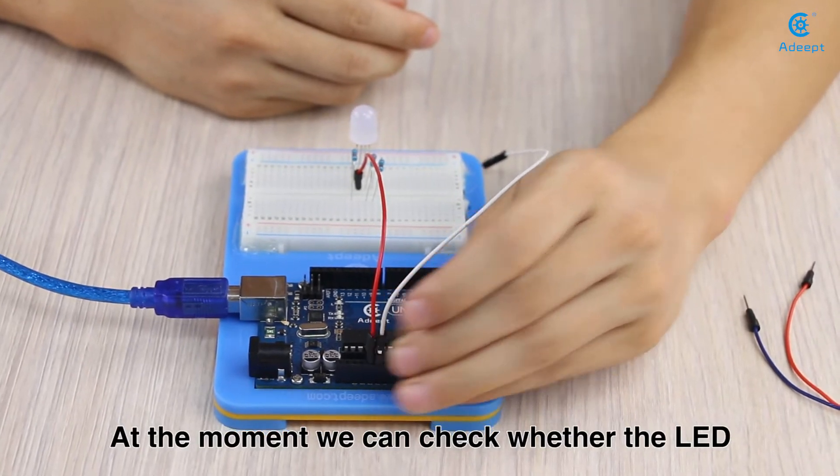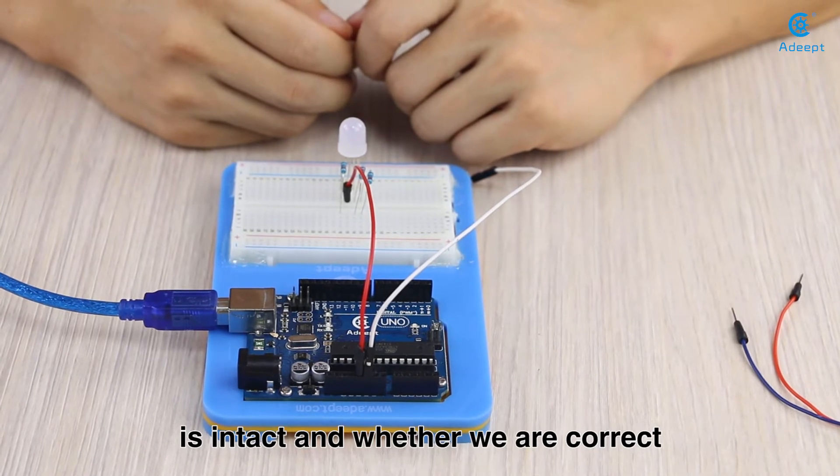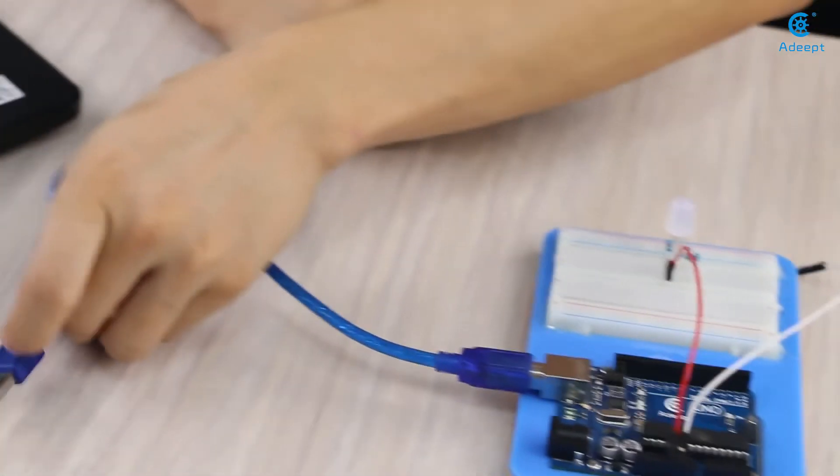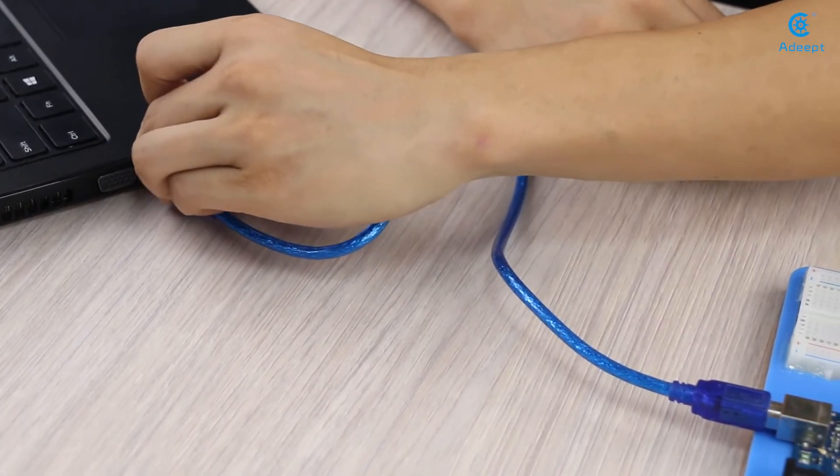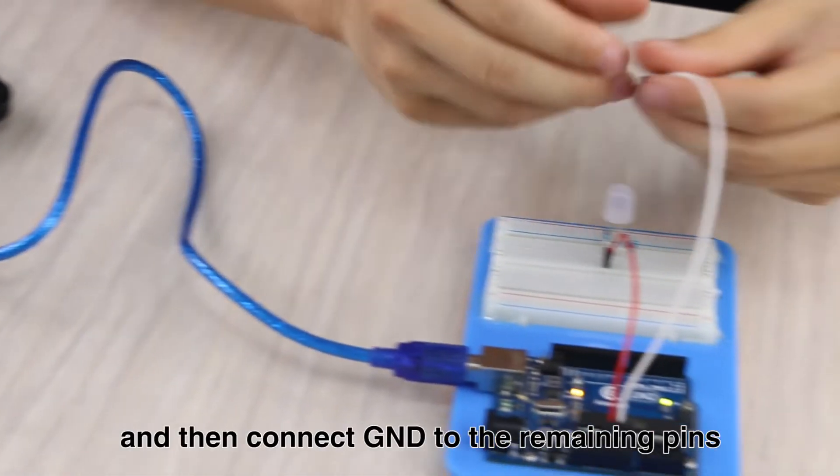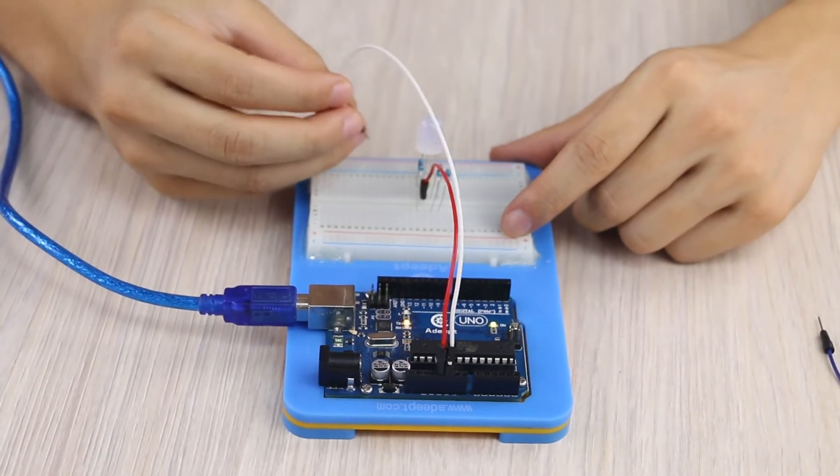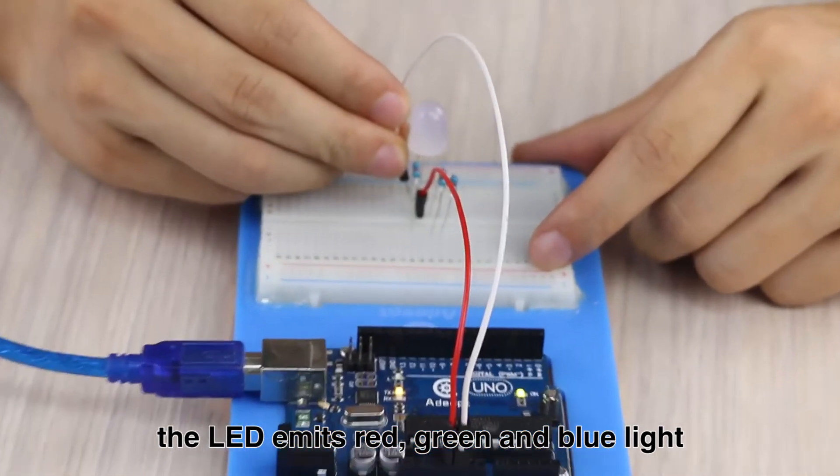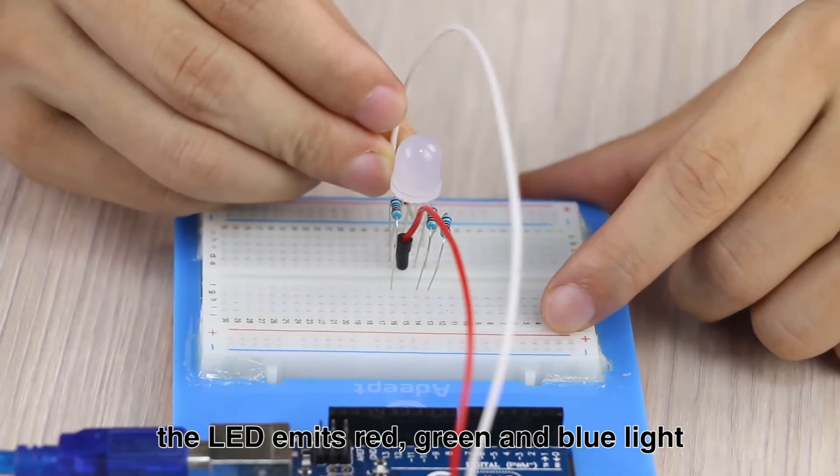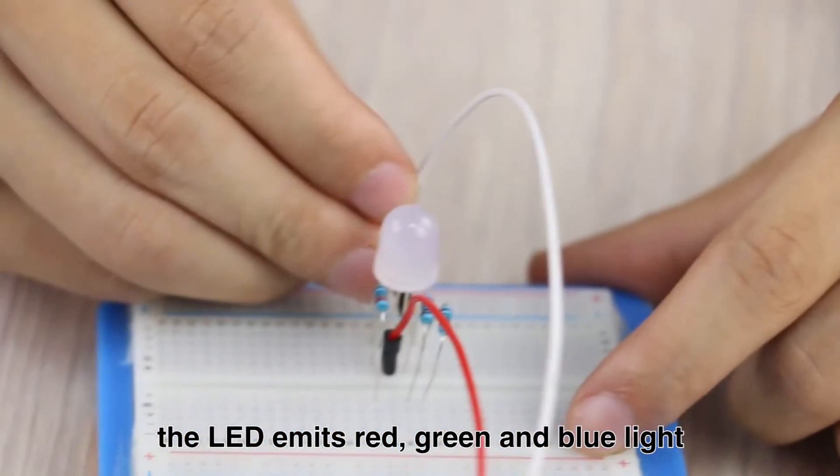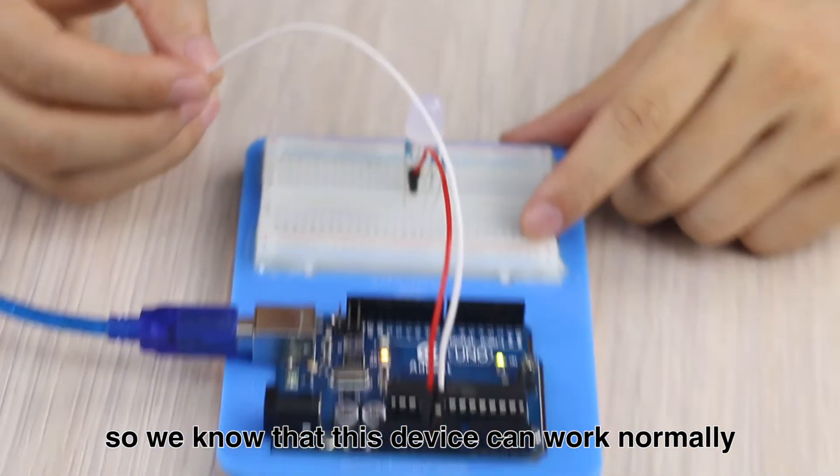At the moment, we can check whether the LED is intact and whether we are correct. Plug in, and then connect GND to the remaining pins. We can see that the LED emits red, green, and blue light. So we know that this device can work normally.